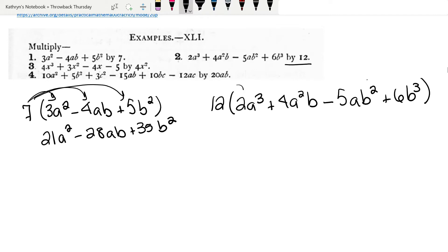Now we're going to distribute just like we did with the last one. 12 times 2 is 24a³. 12 times 4 is 48a²b. 12 times minus 5 is minus 60ab² plus 72b³.